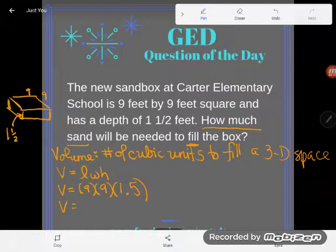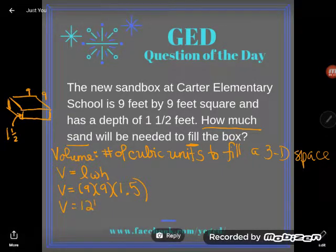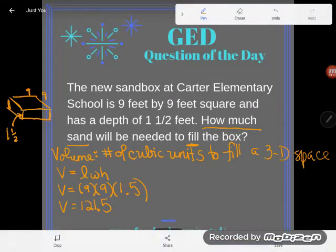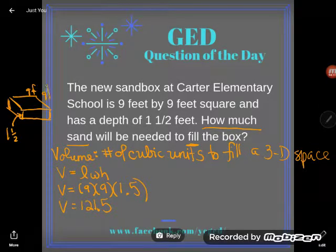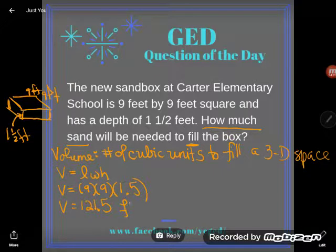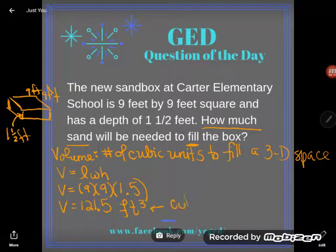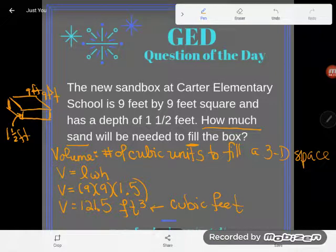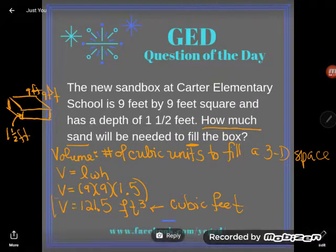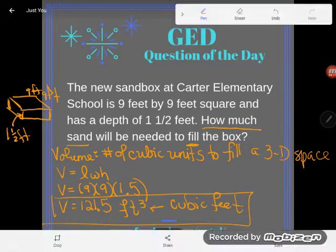Nine times nine times 1.5 gives me 121.5. But don't just stop there — 121.5 what? I multiplied feet by feet by feet, so I'm now in cubic feet. I'm too lazy to write out the words, so I'll use the official abbreviation: the symbol for feet with a little three on it, which is the abbreviation for cubic feet. So how much sand would be needed to fill the box? 121.5 cubic feet of sand. If you have any questions about this or any other GED math topic, drop it in the comments and I'll do my best to answer it.